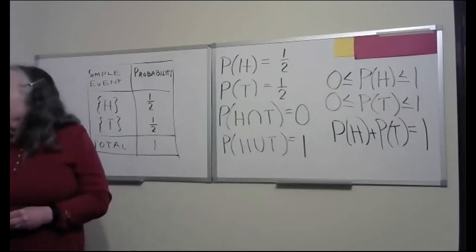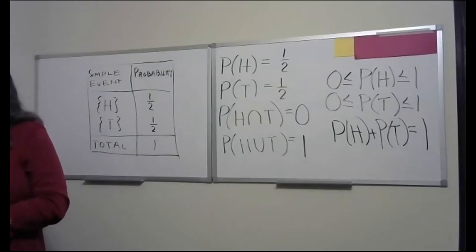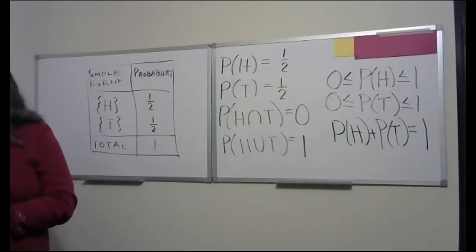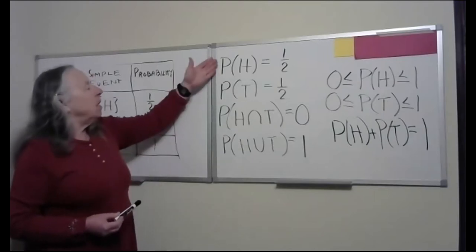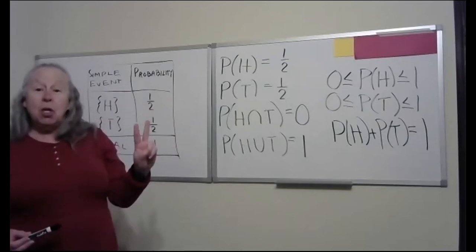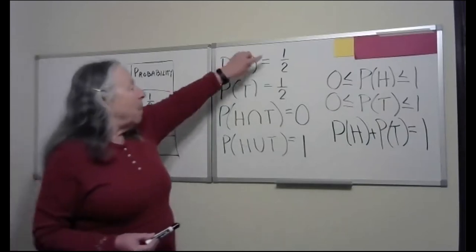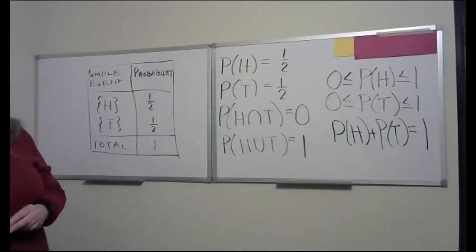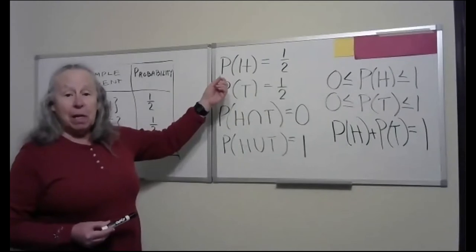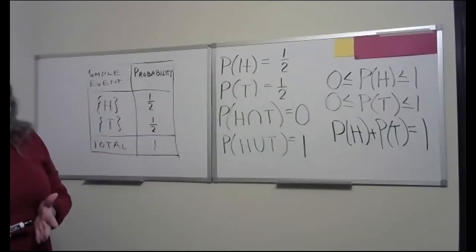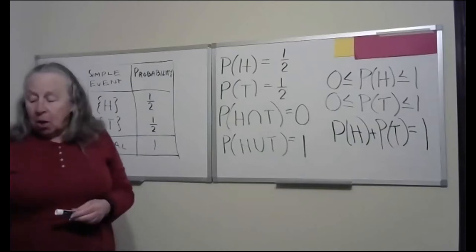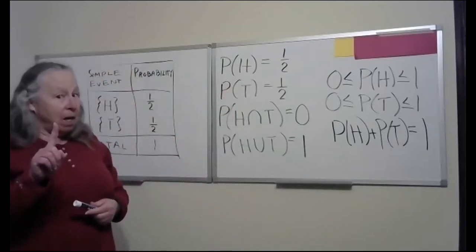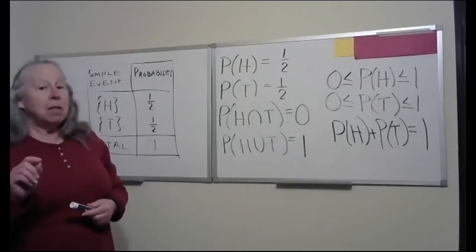Every non-empty event of the experiment may be obtained by taking a finite union of some of the simple events. A uniform sample space means we have outcomes that are equally likely. For example, tossing a coin or rolling a single die gives a uniform sample space. If I had a weighted coin where heads comes up more frequently, it would not be a uniform sample space.